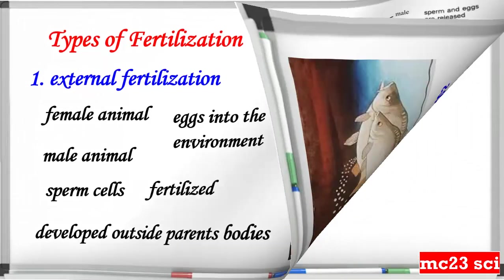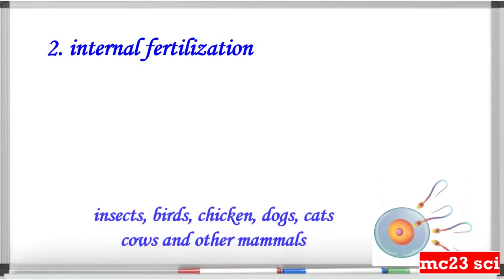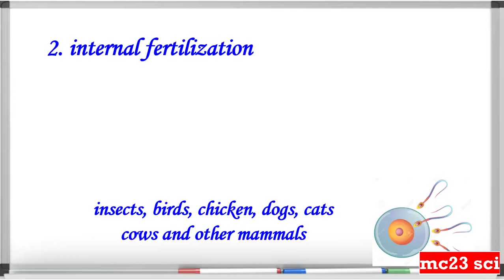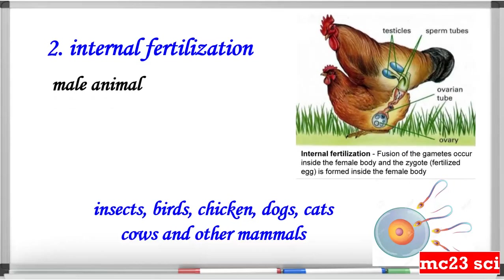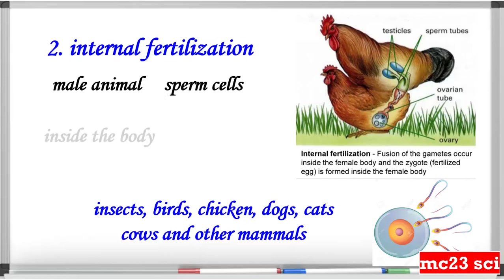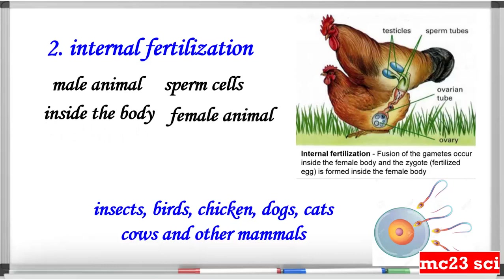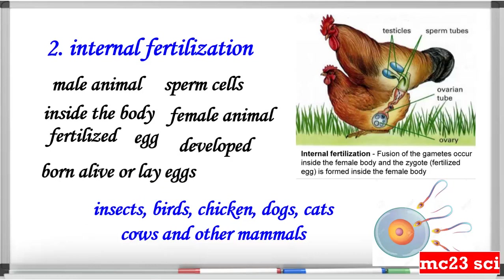The second is internal fertilization, as in insects, birds, chicken, dogs, cats, cows, and other mammals. Take a look at the picture wherein the male animal releases sperm cells inside the body of the female animal and it fertilizes the egg. The fertilized egg develops inside the female body and is born alive or laid as eggs.